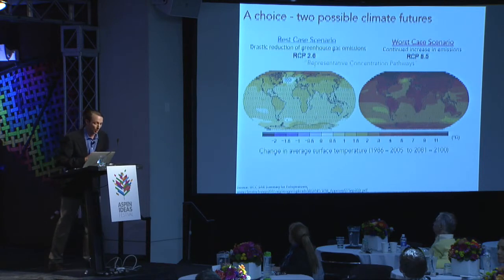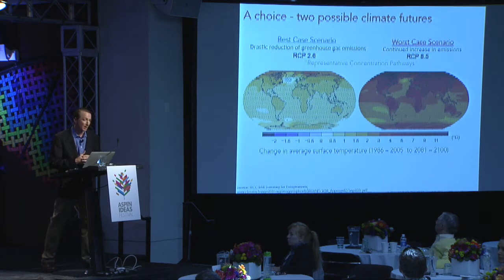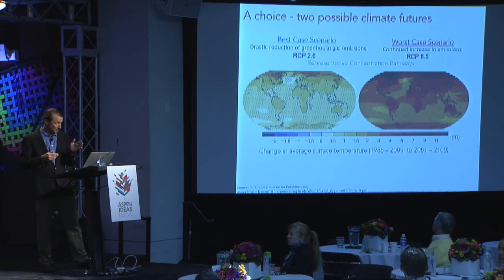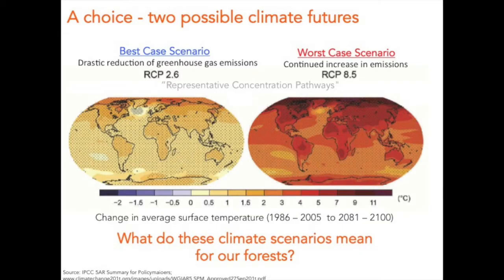Here's the reality — this is the choice. We have a choice of two possible climate futures ahead of us. These two possible climate futures are going to be manifest in the next approximate hundred years — well within your lifespan and your children's lifespan. On the left, I have a best-case scenario: a drastic reduction in greenhouse gas emissions. We can contrast that with a worst-case scenario, which is effectively business as usual and continued increase in greenhouse gas emissions. These two plots show the change in average surface temperature from now until about 2100 — a very dramatic rise in mean global temperature.